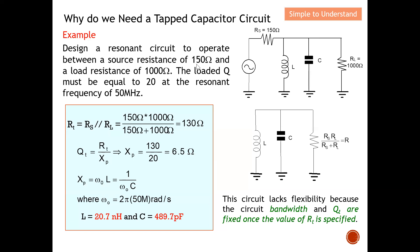From this diagram, you can see the source resistor of 150 ohms and the load resistor of 1000 ohms. The load Q must equal 20, which means the circuit Q must equal 20 at the resonant frequency of 50 megahertz.